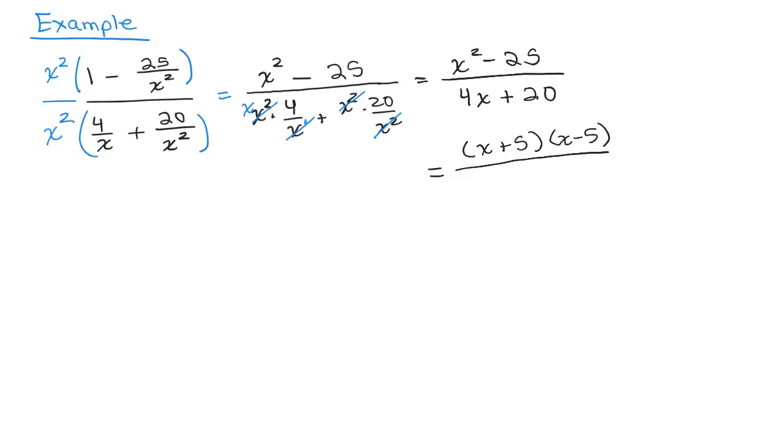And the denominator, the only thing you can do there is take out the common factor of 4. And now I see that I have a common factor of x plus 5, so I can cancel those. Final answer then, in the numerator, is simply x minus 5, and in the denominator, all I have is 4.